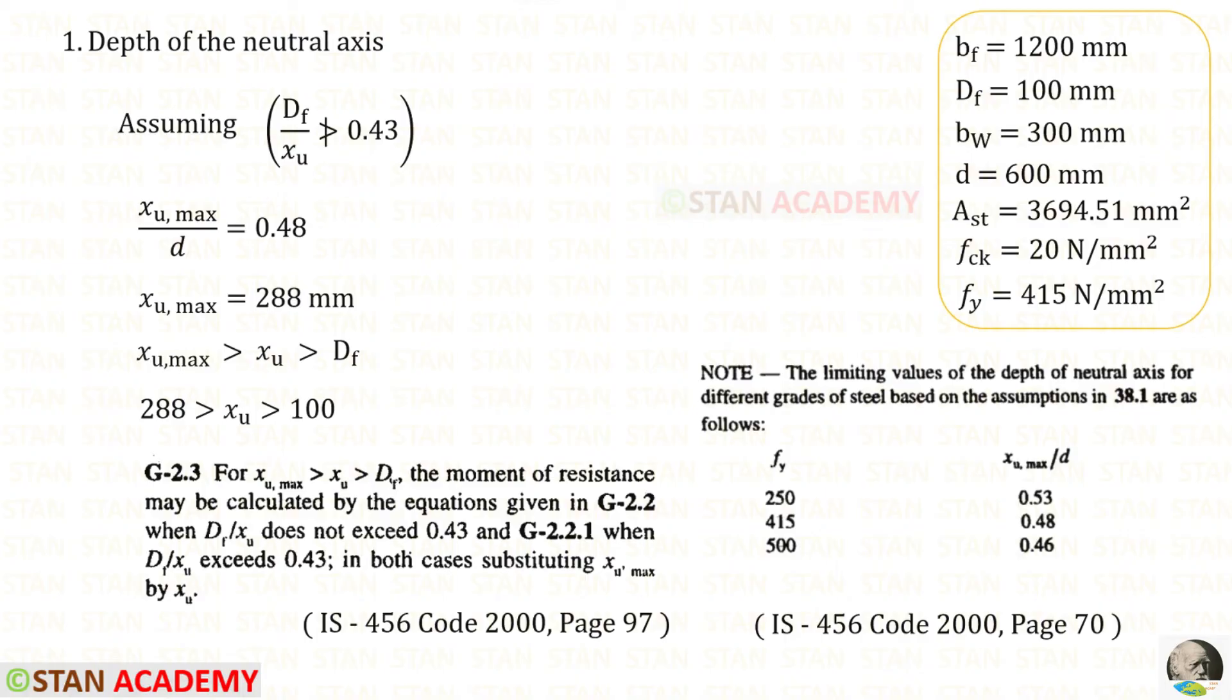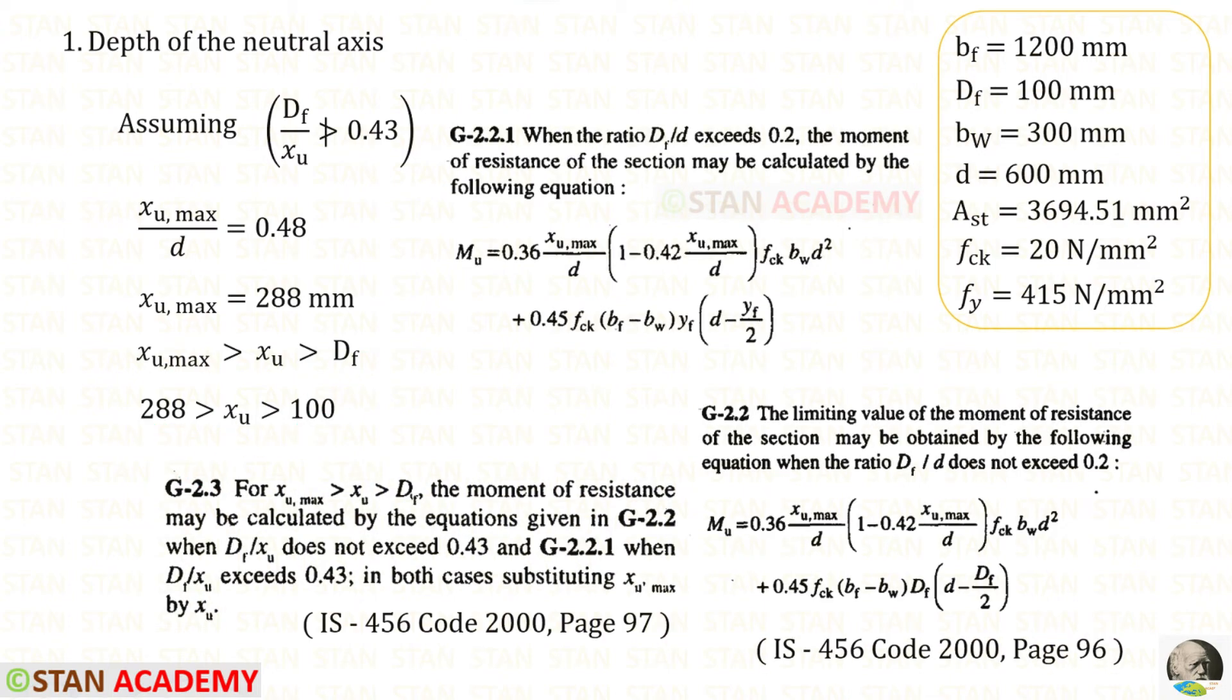So as per our assumption, xu,max will be greater than xu and xu will be greater than df. To find the moment of resistance, we have to use two equations. If df/xu does not exceed 0.43, we need to use the equation given in G2.2. If it exceeds, we have to use G2.2.1.